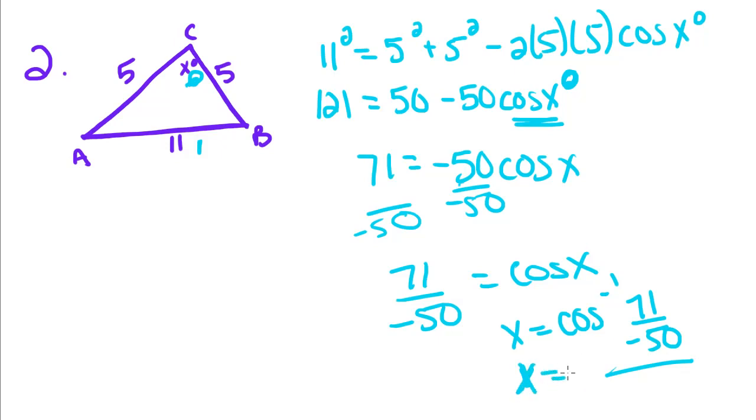So when you type it into your calculator, you're going to hit second cosine, and when you do that, this will pop up. This is what it should look like. And then you're going to plug in 71 divided by negative 50, close the parenthesis, and if you type that into a calculator, you'll get about 63 degrees.